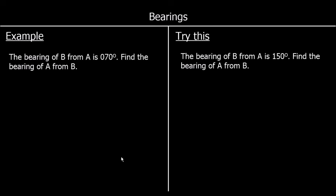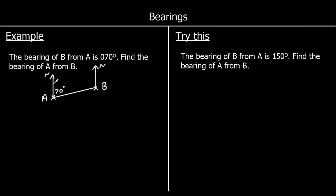Here we have another question: the bearing of B from A is 70 degrees — find the bearing of A from B. So we've got A and B. From A to B is 70 degrees. We'll have a north line at A, a north line at B, and we'll join them up. The bearing from A to B — from the north line, clockwise — is 70 degrees. And we need to find the bearing of A from B: starting at B, going to A, measured from north clockwise — so that's this red angle here.